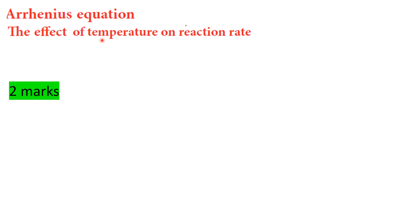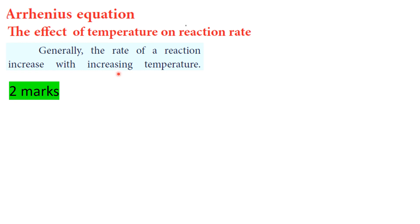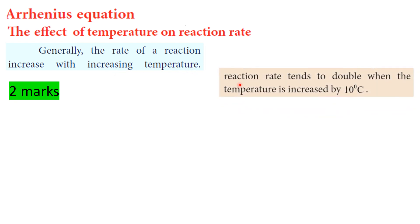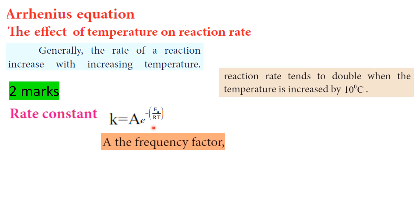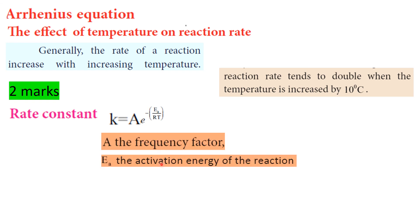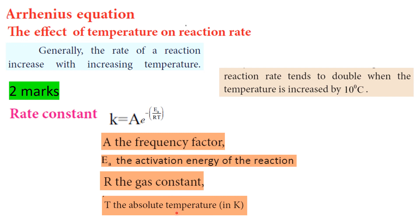Arrhenius equation — the effect of temperature on the reaction rate. The rate of reaction increases with increasing temperature; the reaction rate tends to double when temperature is increased by 10 degrees Celsius. The Arrhenius equation is: k equals A times e to the power (minus Ea divided by RT), where A is the frequency factor, Ea is the activation energy, R is the gas constant, and T is the absolute temperature.